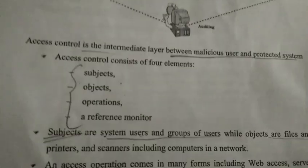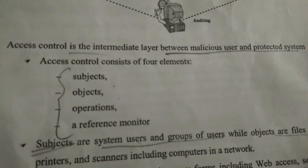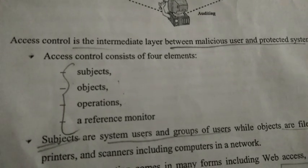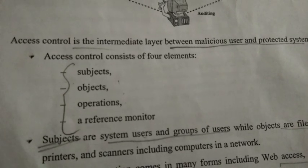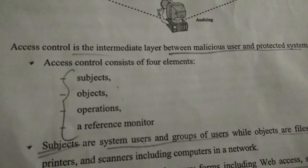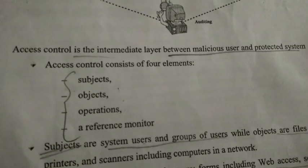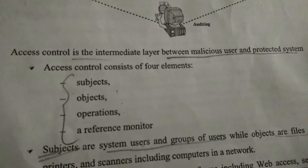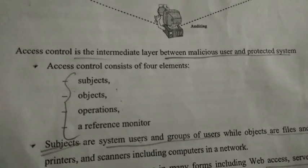Access control consists of four main elements. First is subject, second is object, third is operations, and fourth is the reference monitor. Subject means a user or collection of users. Object means resources like files or memory resources.